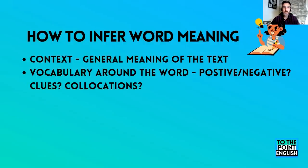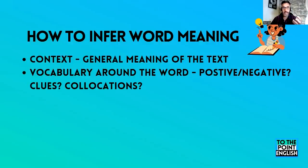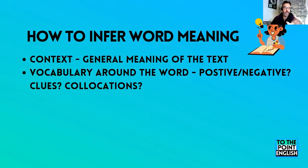What can also help you infer word meaning is the vocabulary around the word. You have to decide: is the word positive or negative? All the vocabulary surrounding the word you're looking at — or even the whole paragraph — can tell you if it's probably positive or negative. Pay attention to clues in the sentence, paragraph, or even the whole text, and think about collocations. If a word collocates with another word, maybe that other word can help you infer the meaning of the word you don't understand.